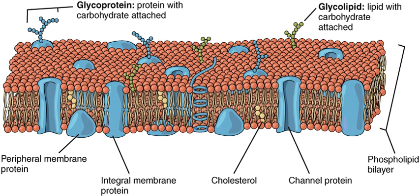The erythrocyte membrane plays a crucial role in blood clotting. In the bilayer of red blood cells is phosphatidylserine, which is usually on the cytoplasmic side of the membrane. However, it is flipped to the outer membrane to be used during blood clotting.